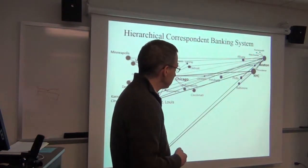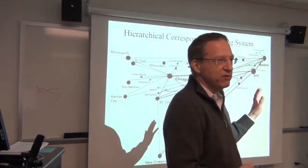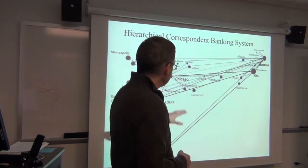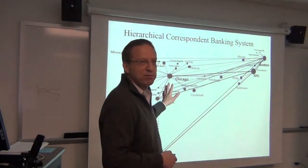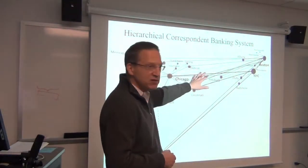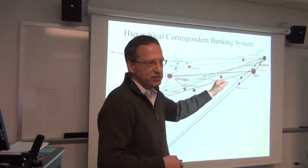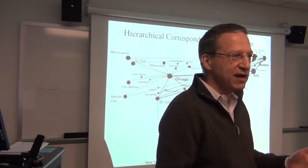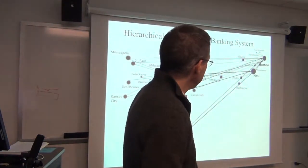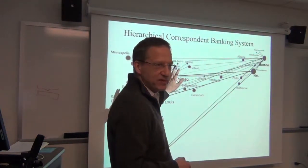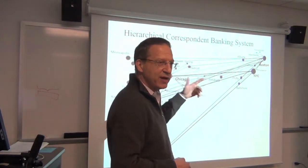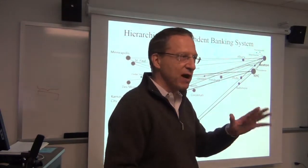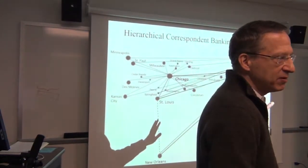We characterize this using network terminology as a sparse network — you only need a few steps to get from one place to another because of the centralization. So this is highly efficient. What's striking is that when the Federal Reserve takes over and centralizes entirely, this system moves money about as efficiently as the Fed did, with one exception: the Fed was able to adopt a telegraphic wire transfer system that this private system was incapable of.